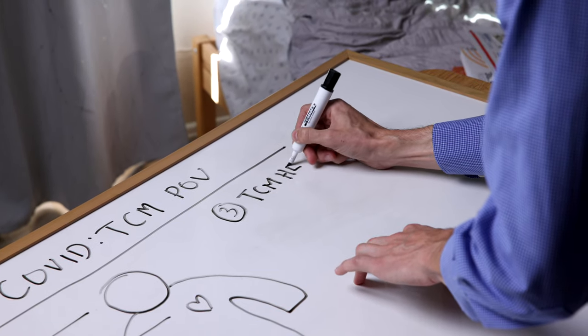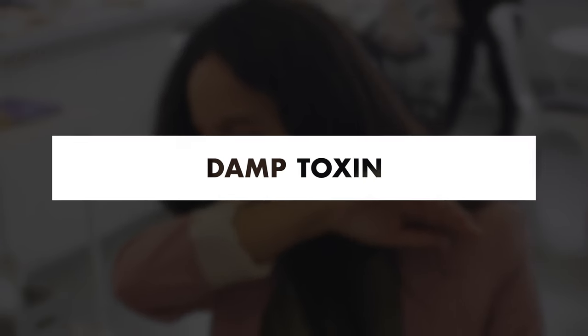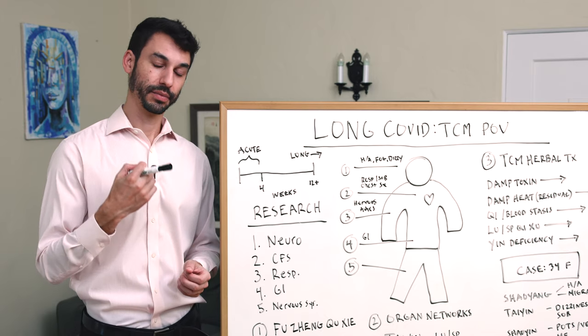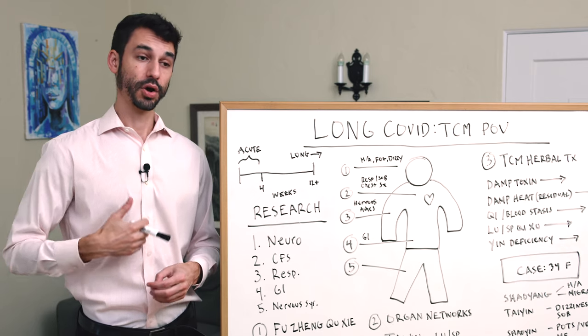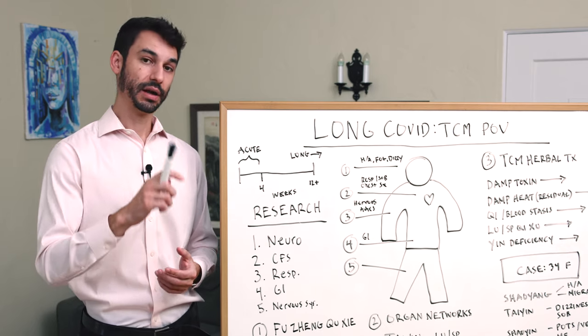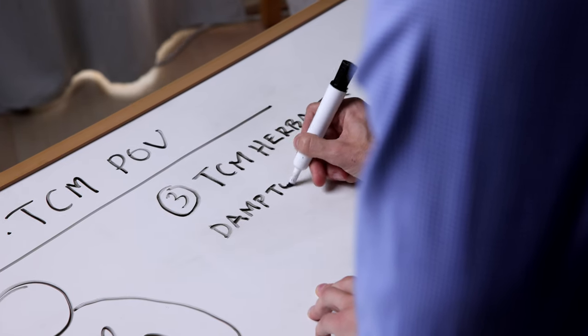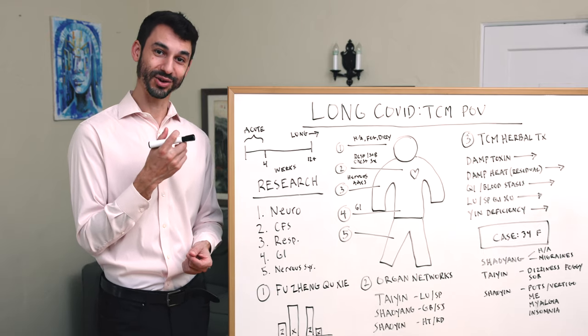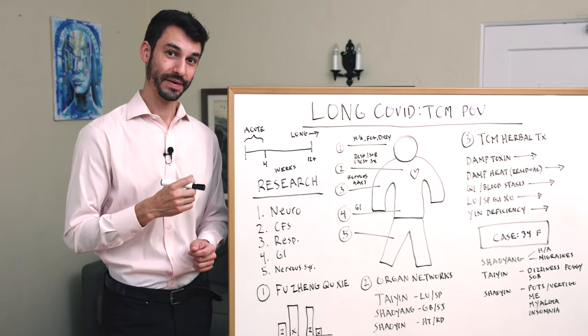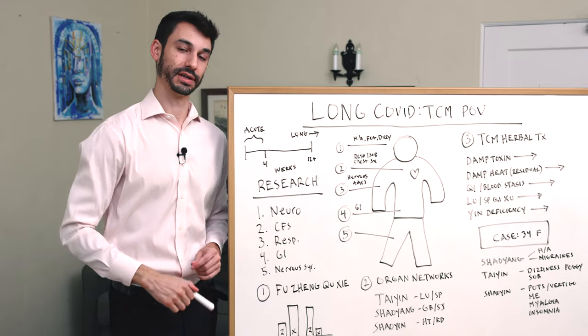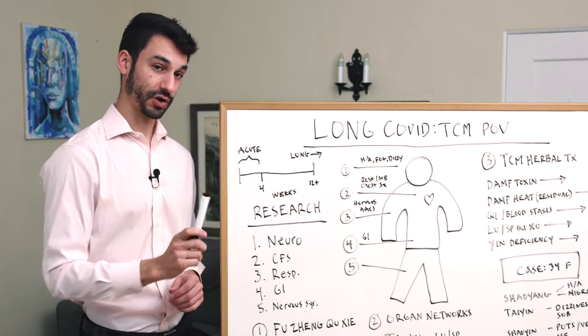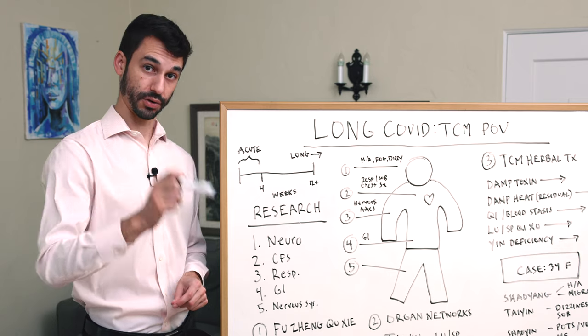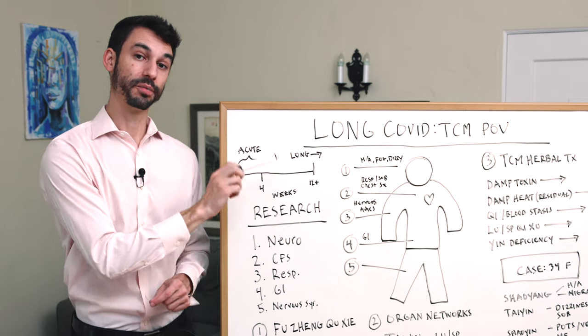When we talk about the herbal treatments for Long COVID, first thing we're talking about damp toxin. When we talk about dampness, we are talking about not only mucus issues involving the mucus membranes, like having to clear your throat or cough up mucus and phlegm, but dampness also shows up in the gut—candida or yeast issues, bloating, food allergies, thick white tongue coat. If you looked at your tongue while you had COVID, a lot of you had a disgusting thick white tongue coat. That is damp toxin according to TCM.